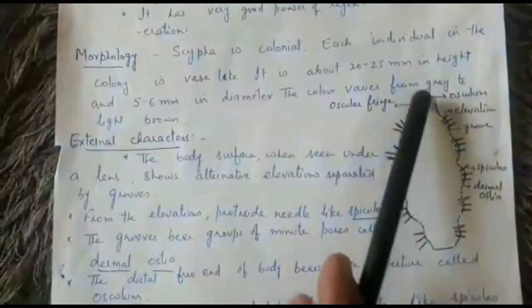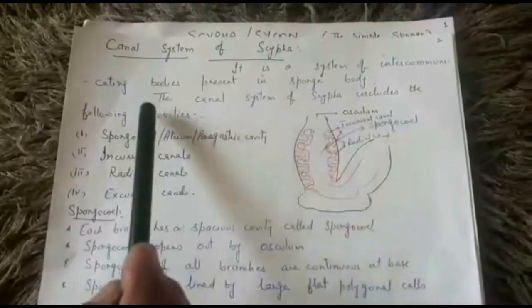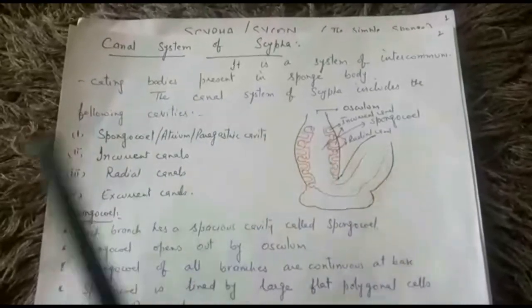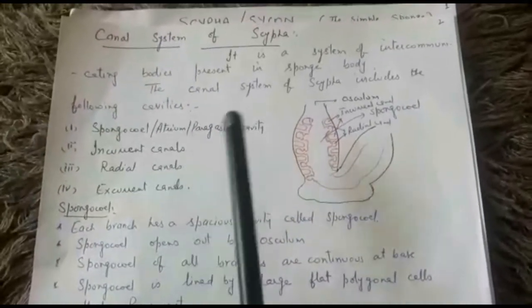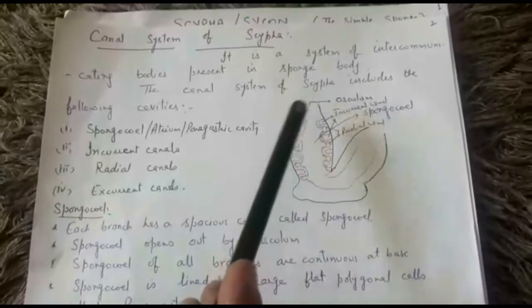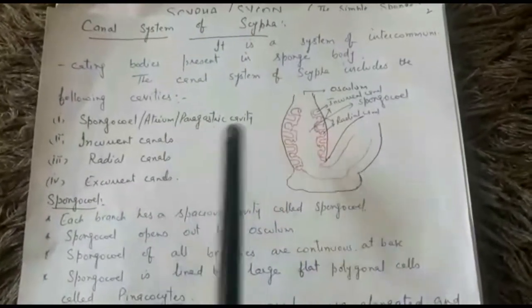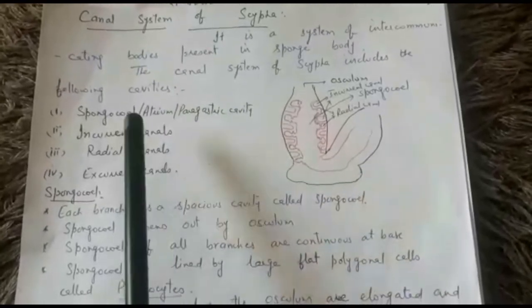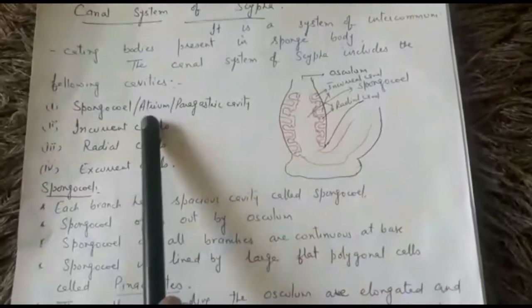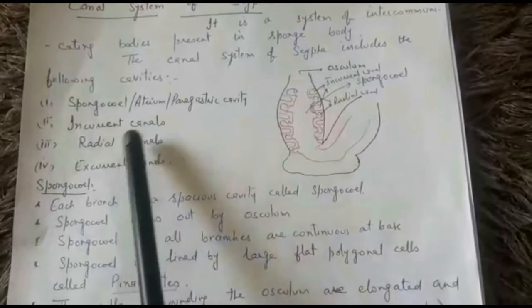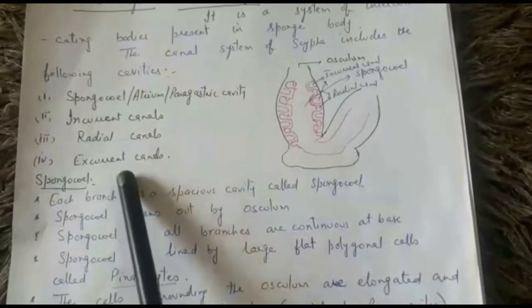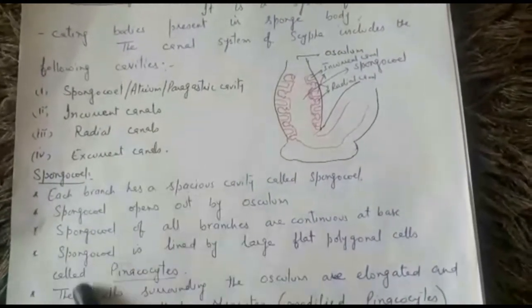The unique feature of Scypha is its canal system. The canal system is a system of intercommunicating cavities present in the sponge body. The canal system mainly includes the following cavities: the spongocoel, also known as the atrium or paragastric cavity; the incurrent canal; the radial canal; and the excurrent canal.